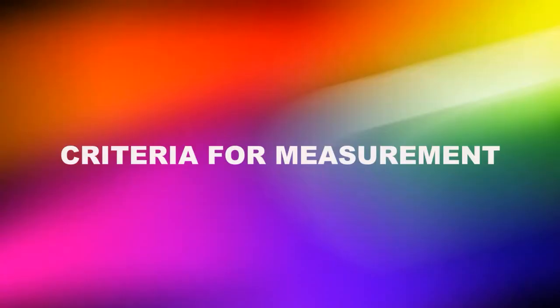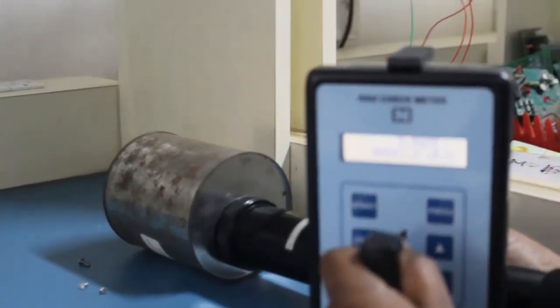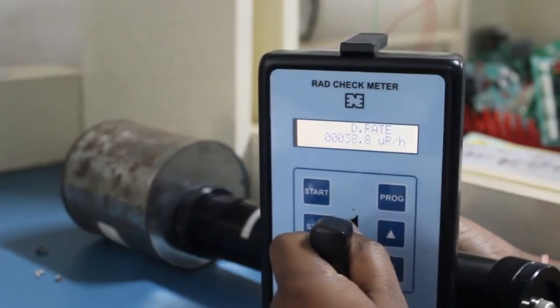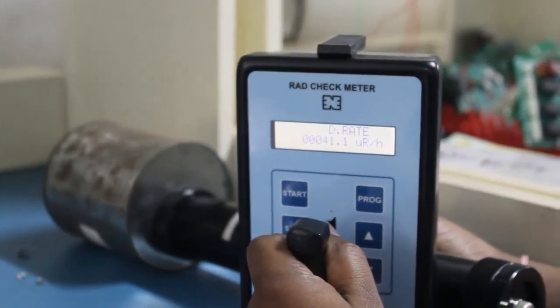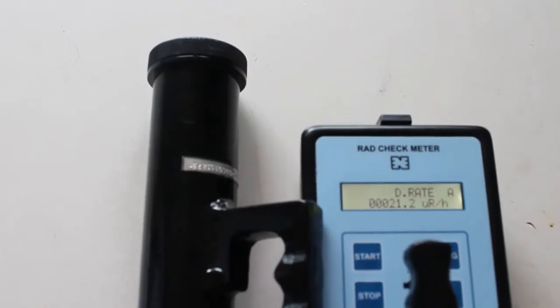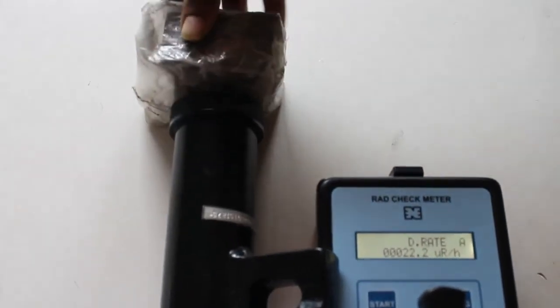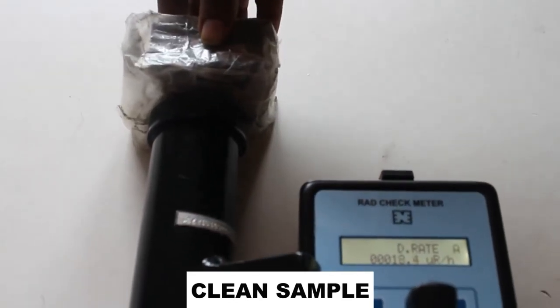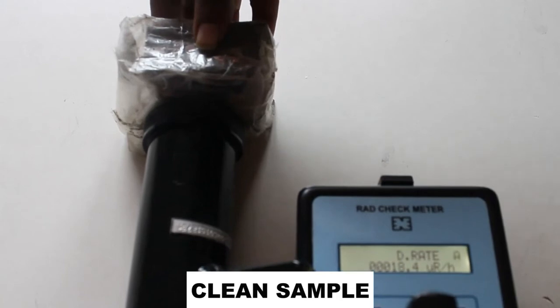Criteria for measurement of radioactive contamination. When we make the radioactive contamination measurement, there are three inferences that we have to come to conclusion. 1. Clean sample. When we touch the sample with the instrument detector or probe, if the reading goes lower than 10% to 12% or more than the background reading, then the sample is clean.